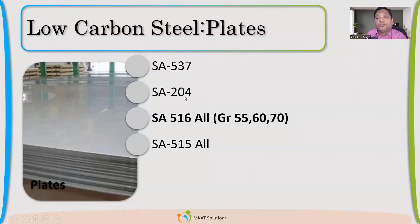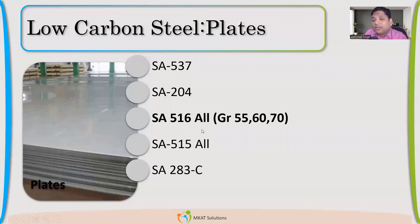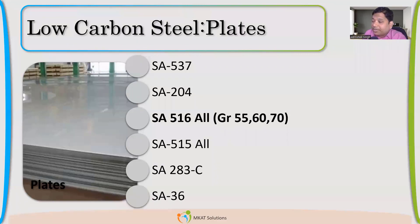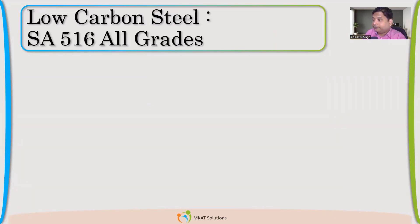If we want boiler quality plate, SA204 is the material. If we want high strength carbon steel for high pressure to reduce thickness, SA537 is the material. For tank or other structural purposes, SA283 is the material. So pressure parts from SA516, SA204, SA537, or SA515 if temperature is high; structural parts from SA283.